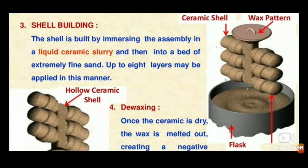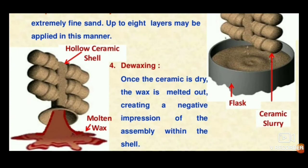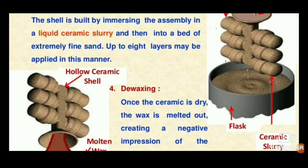Next is shell building. To make the wax strong, the outer surface of the wax pattern assembly must be coated. A liquid ceramic slurry is placed in a container and the wax pattern assembly is dipped into it so that the wax surface gets coated with the ceramic slurry.